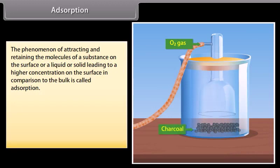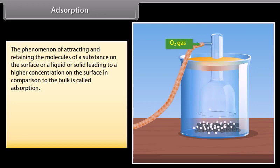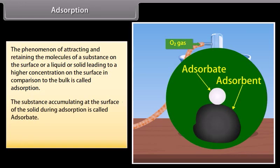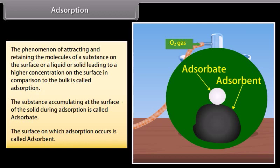The phenomenon of attracting and retaining the molecules of a substance on the surface of a liquid or solid, leading to a higher concentration on the surface in comparison to the bulk, is called adsorption. For example, when oxygen gas is taken in a closed vessel containing powdered charcoal, the pressure inside the enclosed vessel decreases, due to adsorption of gas molecules on the surface of charcoal. The substance accumulating at the surface is called adsorbate, and the surface on which adsorption occurs is called adsorbent.